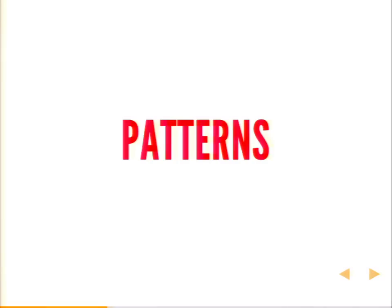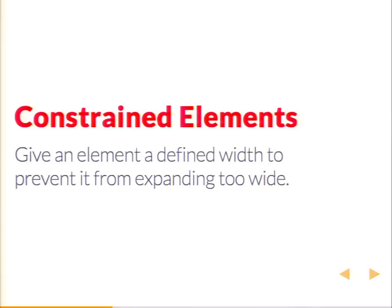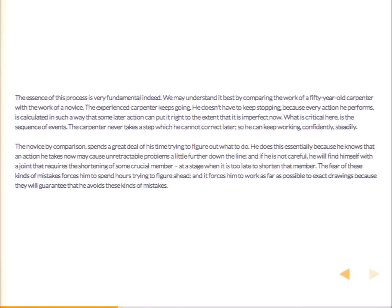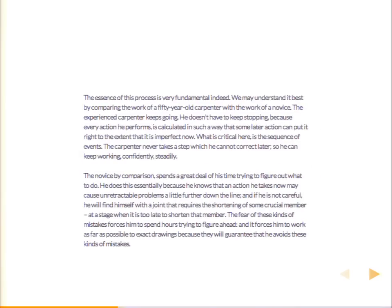So let's look at some actual patterns. I'm going to start off super simple with one that I call constrained elements. Give an element a defined width to prevent it from expanding too wide. It's super simple — it's one property, max-width or width or whatever. So here we have a super long bit of text. The measure is a little bit too long for it to be easily readable. Simple solution: just add a max-width to it so it doesn't get too wide. So that's pretty straightforward. Here's another example of the same problem.